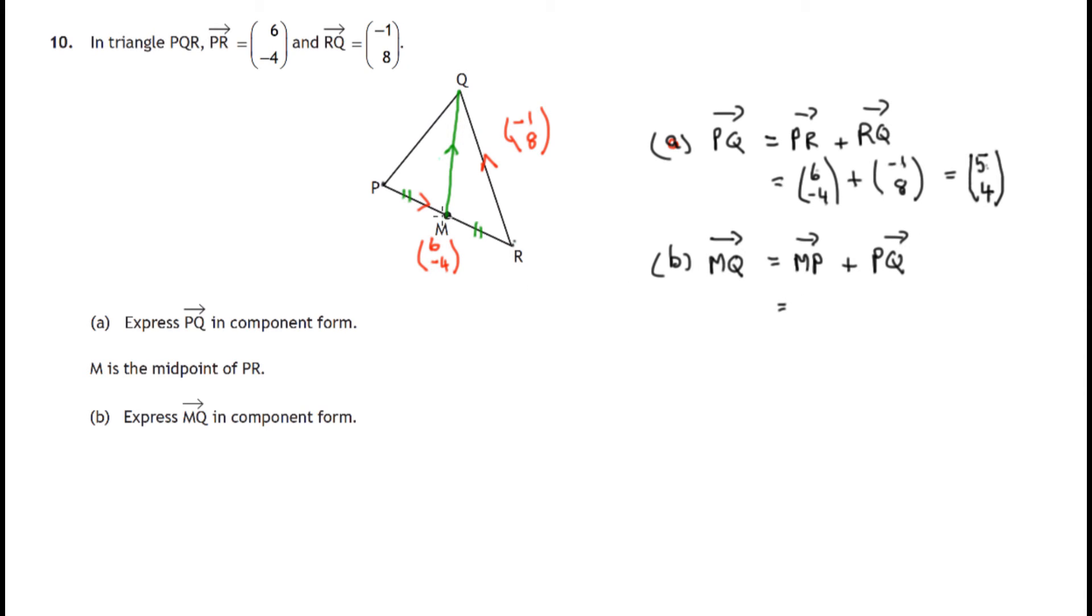Now what on earth do we know about travelling from M to P? Well we know first of all that it's half the journey from R to P. So it's half the journey from R to P, and we do know something about the journey from R to P because we've worked out or we were given the fact that if we travel from P to R we've travelled 6 to the right, 4 down. We know the components of PR.